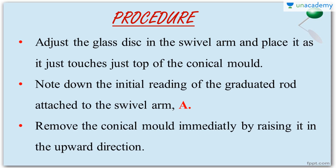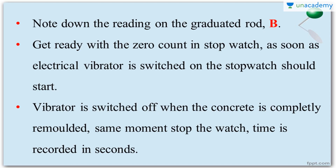Before starting the test, remember the glass disc attached to the swivel arm. Place the glass disc above the cone, positioned so that it just touches the top of the cone. Take the reading of the graduated rod attached to the swivel arm — let that be A, the initial reading. Then, just like in the slump cone test, remove the conical mold immediately by pulling it upwards uniformly. The slump will then form. Now note down the reading on the graduated rod — let that be B, the final reading.